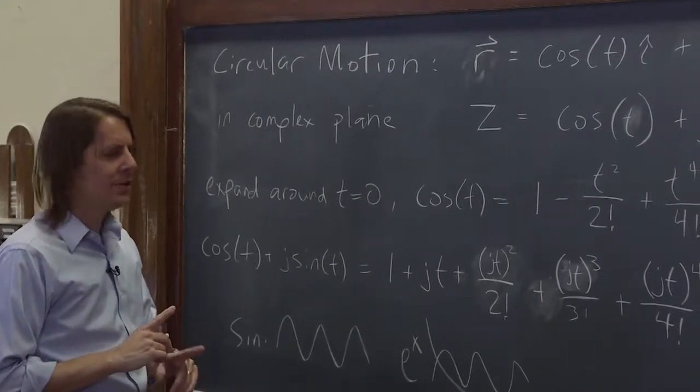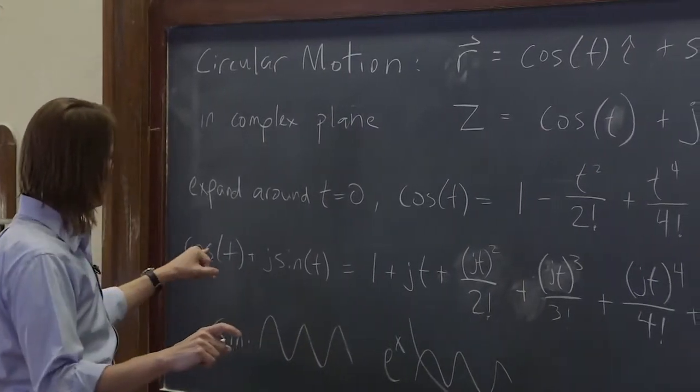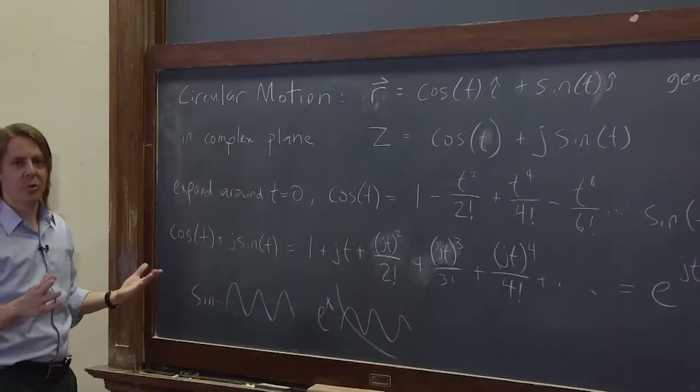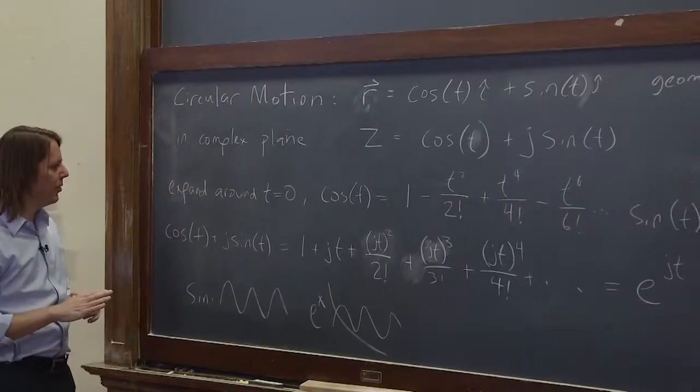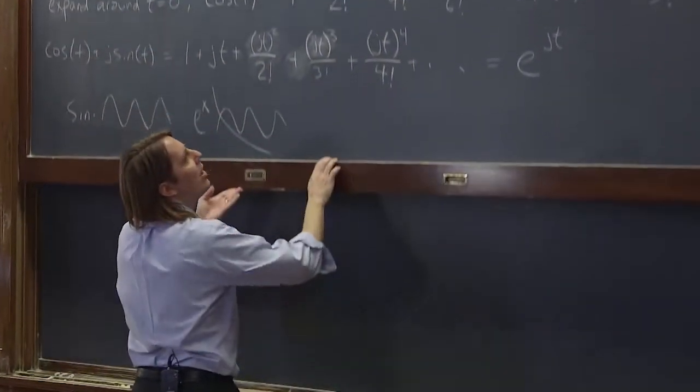There's one other thing that you can get out of this. So if we look at this expression, cosine of t plus j sine of t equals e to the jt - that's Euler's equation. This is figured out by Euler. But we can do something even more interesting - we can let t equal pi.